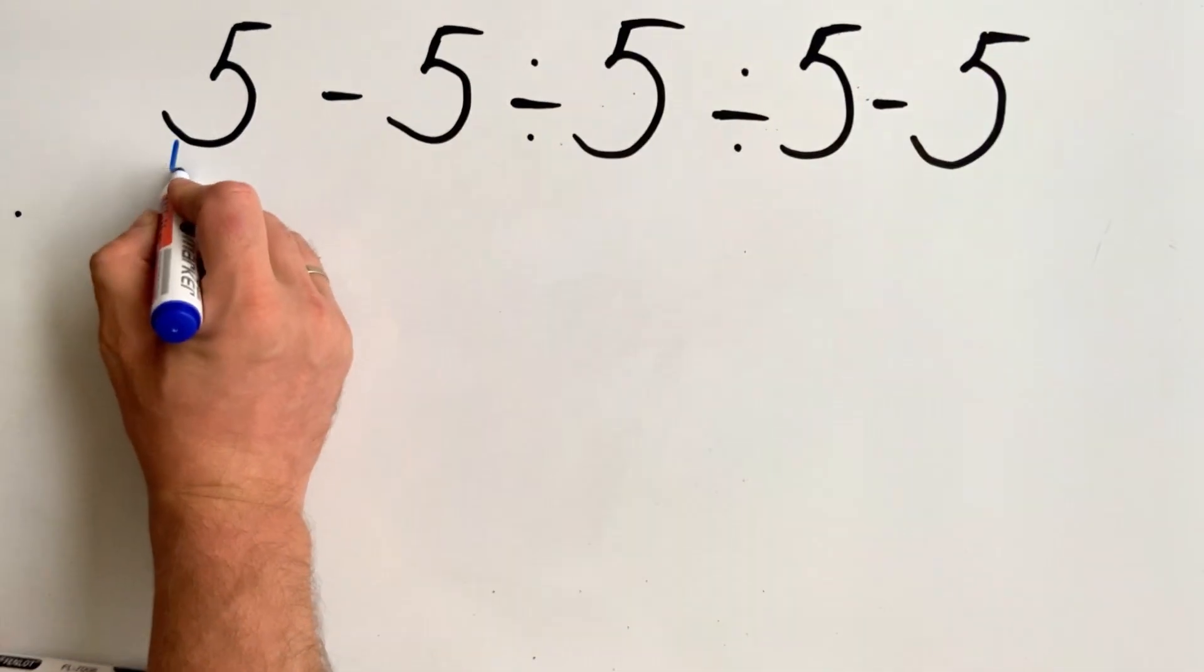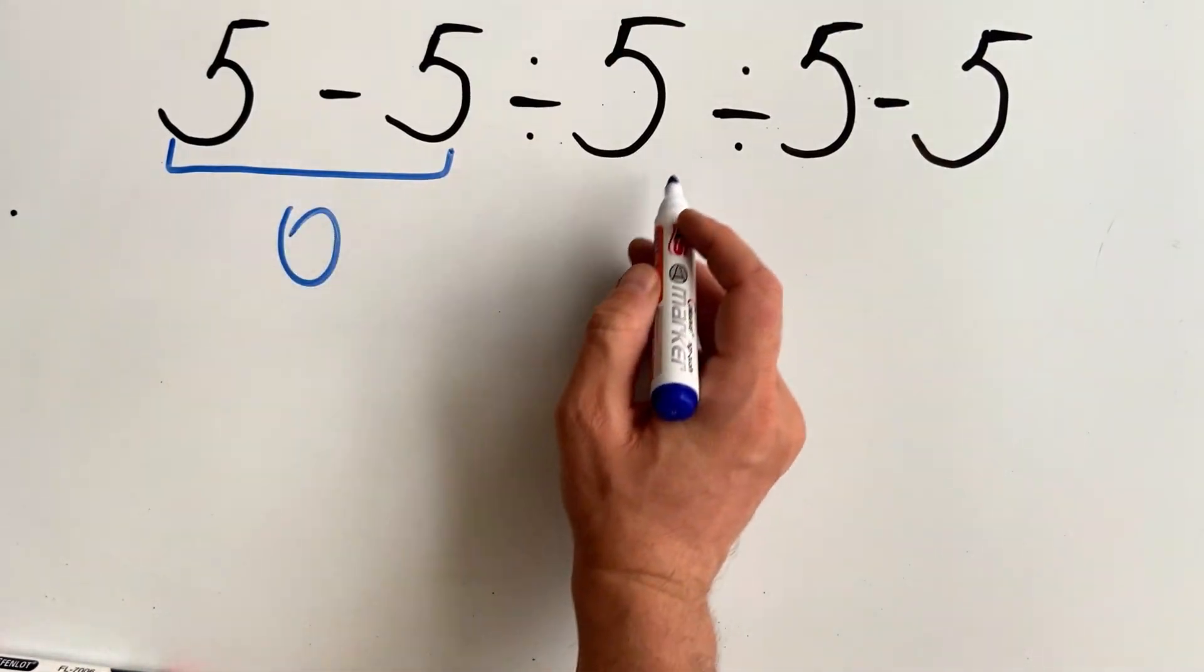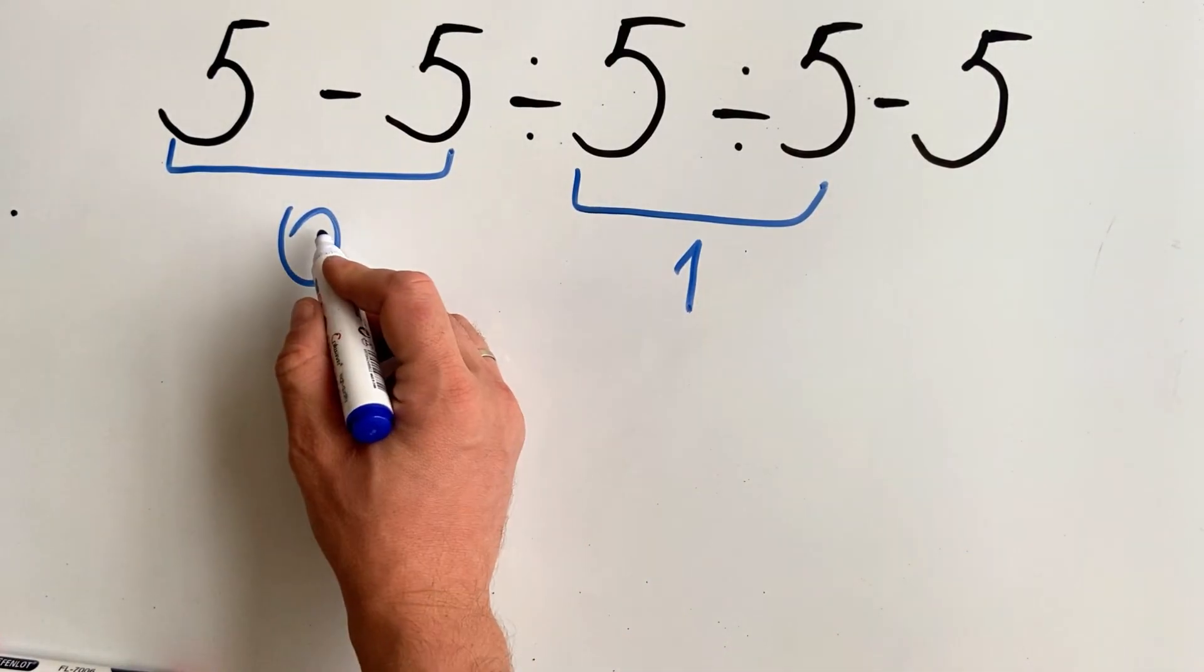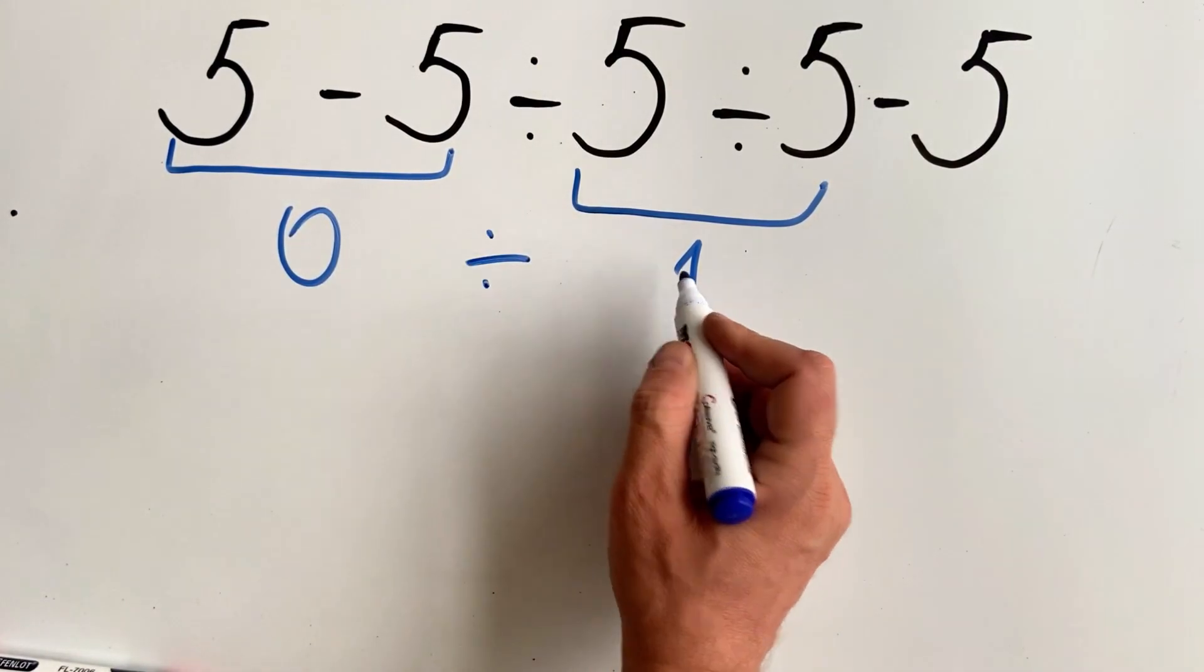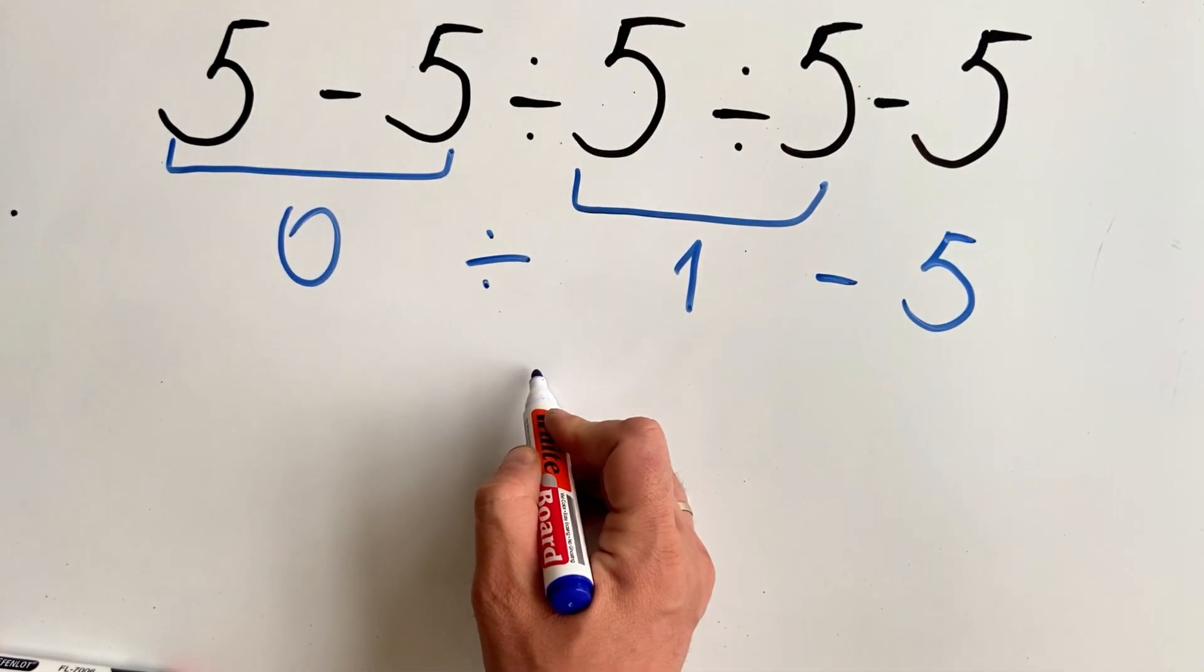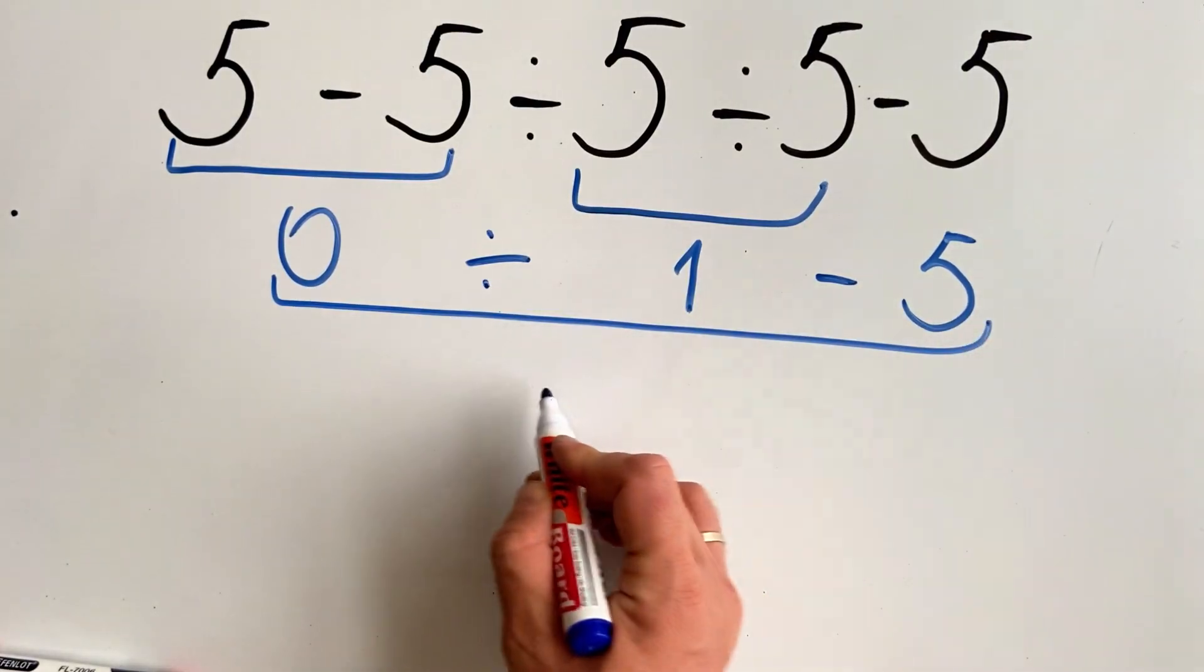5 minus 5 equals to 0. 5 divided by 5 equals to 1. 0 divided by 1 minus 5 equals to minus 5.